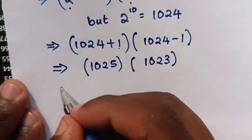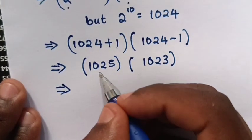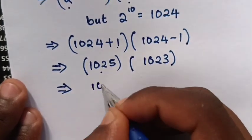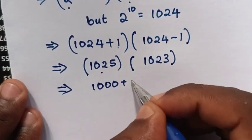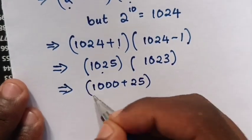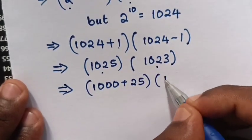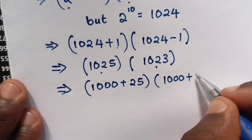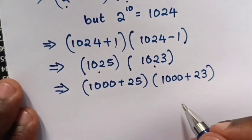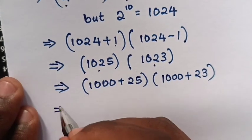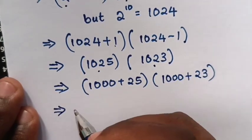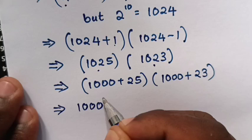Then from here, 1025 is the same as 1000 + 25, times 1000 + 23.